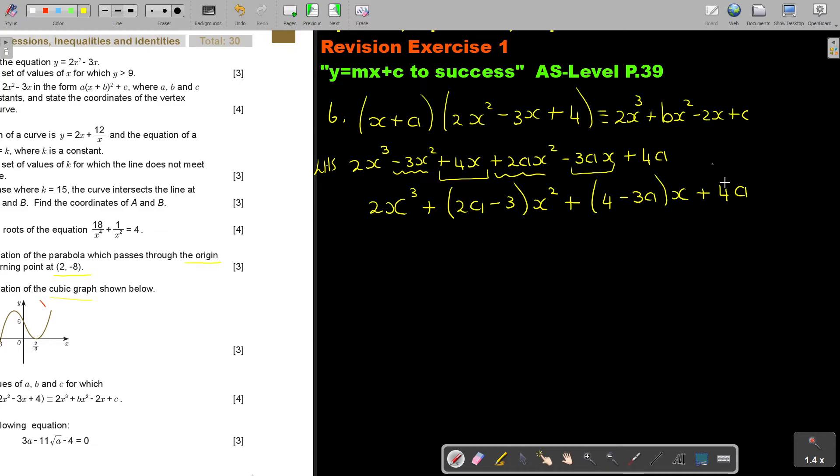Now if you compare it to the right hand side, the left hand side is equal to the right hand side. You can now go and say that 2 equals 2, we have that. That B is going to be equal to this. So B is equal to 2A minus 3. That negative 2 is equal to 4 minus 3A. And then the last one, 4A equals C.